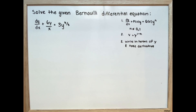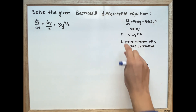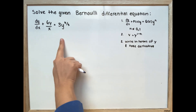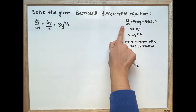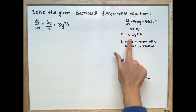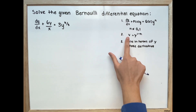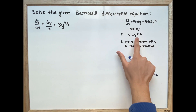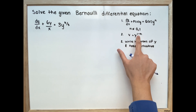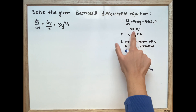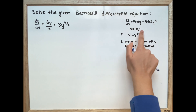Our first step is to write our equation in the standard Bernoulli format. Second, we are going to substitute v equal to y to the power of 1 minus n, where n is not equal to 0 or 1.